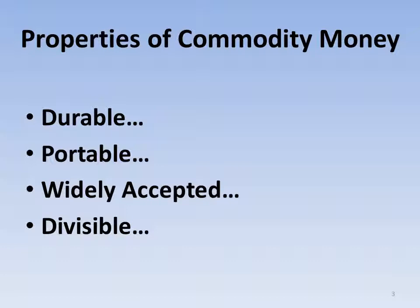The final property is uniformity. We need to understand that quality will be consistent — if I say 24 karat gold, you know exactly what that means and we can verify it with some precision. Notice that gold and silver both satisfy all five of these properties, which is why historically in different times and places we've seen both gold and silver circulate as money, each with a separate usefulness as a commodity.